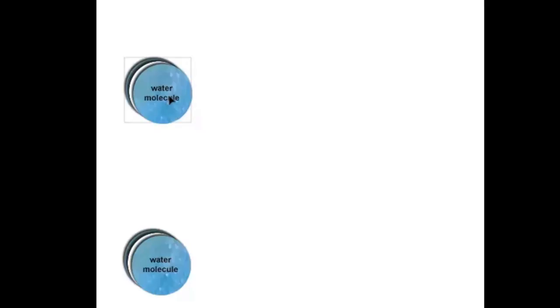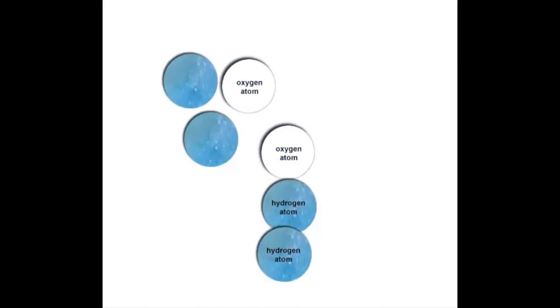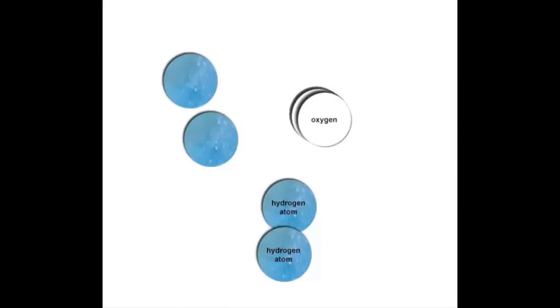Now looking at two water molecules, in the presence of the pigment, when light energy strikes those two water molecules, it splits them into their component atoms. We then have a reaction between the two oxygen atoms — they form oxygen gas. That gas is what we often think of when we think about what plants do during photosynthesis: they produce oxygen.